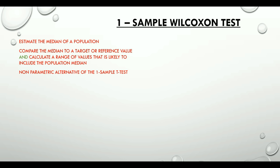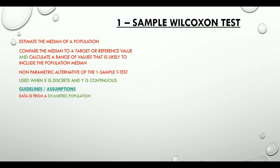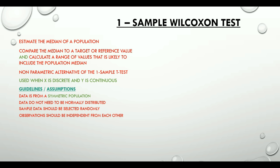We use this test when x, or the independent variable, is discrete and y, or the dependent variable, is continuous. Assumptions for this test are that data is from a symmetric population — it does not need to be normally distributed. Sample data is selected randomly and observations should be independent from each other.